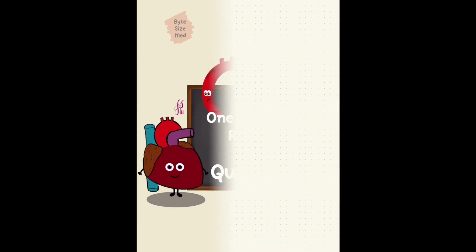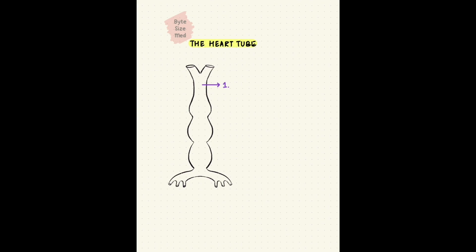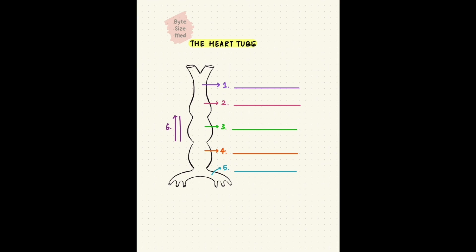We'll start off with a very straightforward one. The heart develops from the heart tube. All you have to do is name the parts of that tube. What's the direction of blood flow through this tube? You can pause the video here and take as much time as you need to recall what you know about this structure.